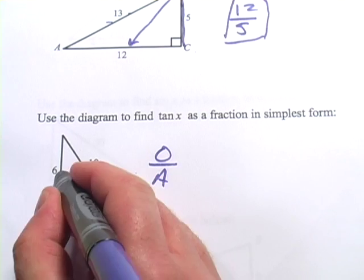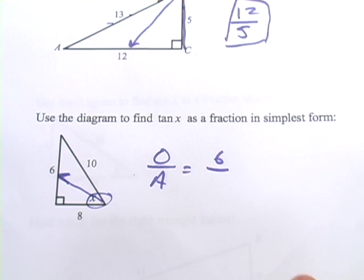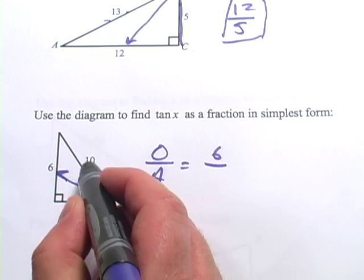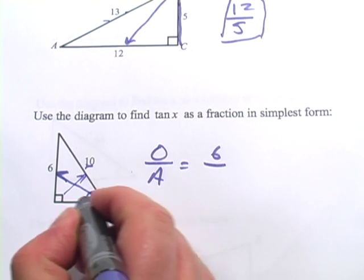The opposite side from X is 6, and the adjacent, well, it's the one that's not the hypotenuse. The hypotenuse here is 10 because it's opposite the right angle. So the adjacent side is 8.